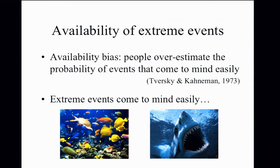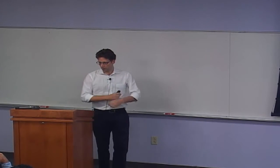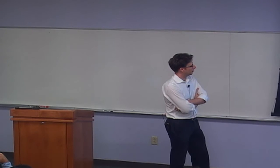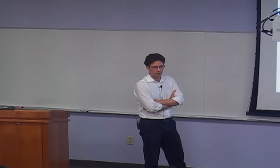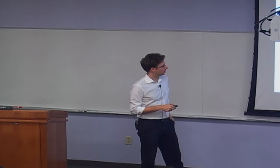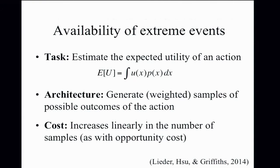Is this actually a sensible thing to do? The psychological literature assumes it's not — that it's a bias where you're overestimating probabilities, and that's just bad. But we can ask whether this is actually reasonable once we consider the problem people have to solve. To evaluate expected utility of an action like going snorkeling, you must integrate over all possible outcomes weighted by probability times utility. In any realistic situation the space of possible outcomes is potentially very large, making this integration quite costly.